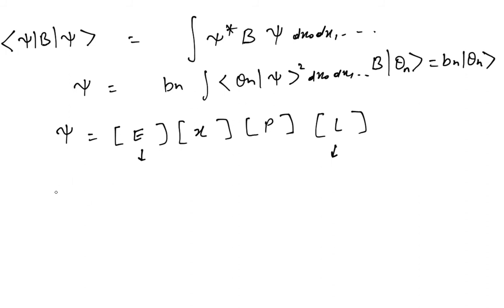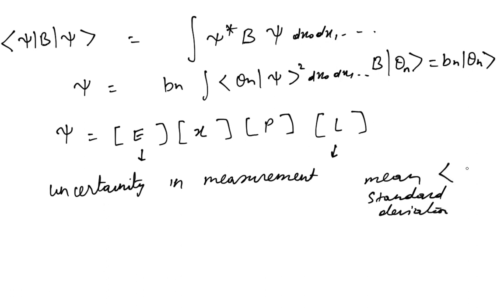Uncertainty in measurement. So expectation value is nothing but the mean, and uncertainty is nothing like standard deviation. So expectation value can also be written as something like this, this is another way of writing. And we know standard deviation, as we know that if you have a normal distribution, this is the standard deviation and the mean is here.